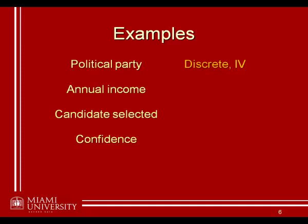Annual income was another independent variable in the context of this study, but annual income can be measured continuously. If we wanted to, we could measure down to the penny how much somebody's annual income is. Even though technically that provides a finite number of values, there are so many values on this scale that for all intents and purposes this would be considered a continuous scale — millions or more different values — which is enough to consider it a continuous variable.